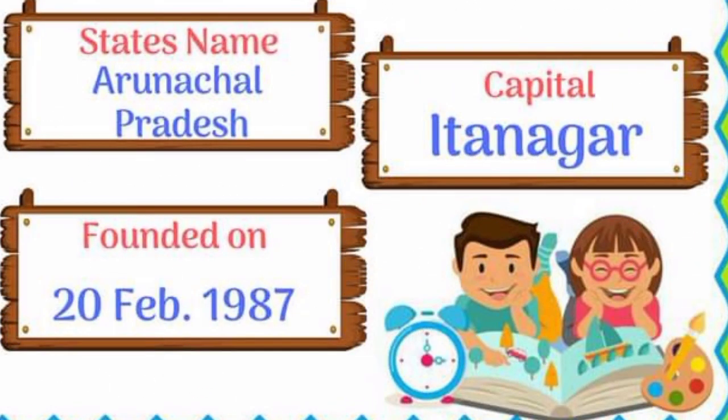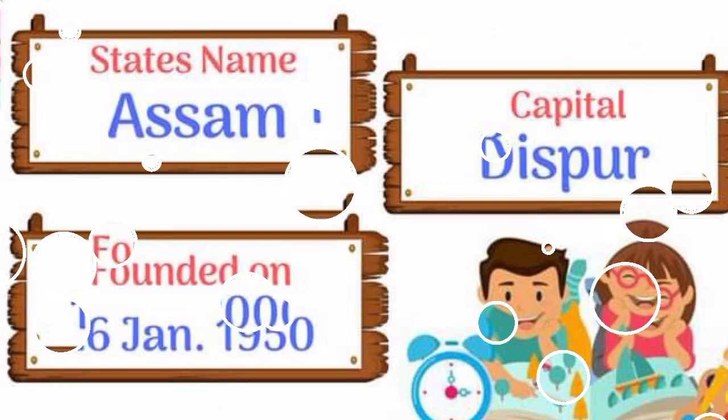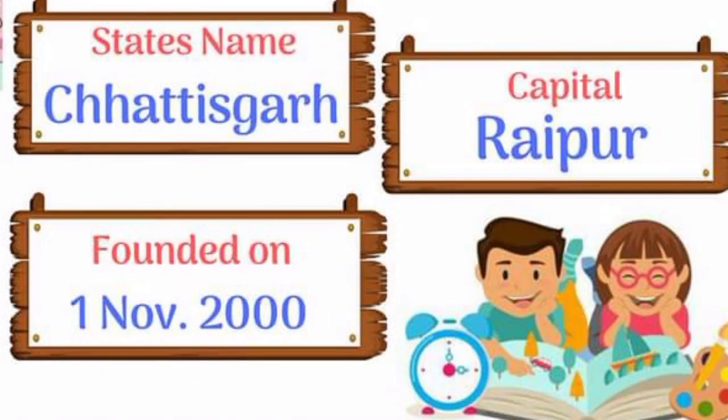Arunachal Pradesh — Itanagar. Assam — Dispur. Chhattisgarh — Raipur.